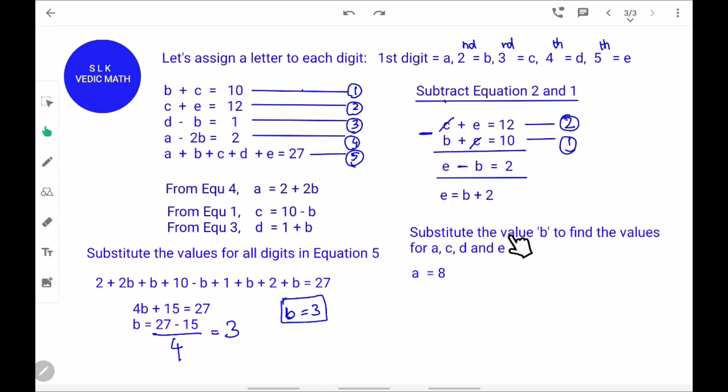Next, we substitute the value B to find the values for A, C, D and E. For A, it says 2 plus 2B. Remember, B is 3. So, 2 plus 2 times 3 is 6. 2 plus 6 is 8. So, A equal to 8. And do the same for C and D.